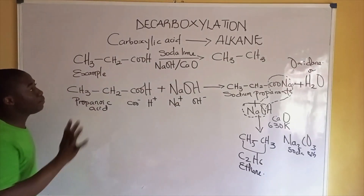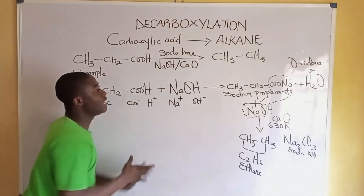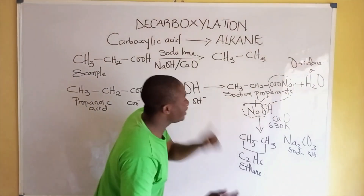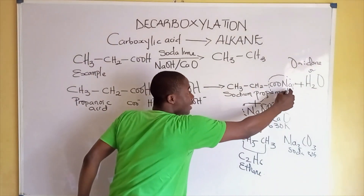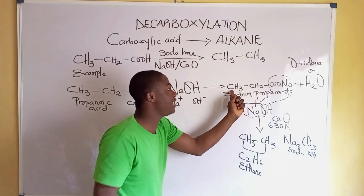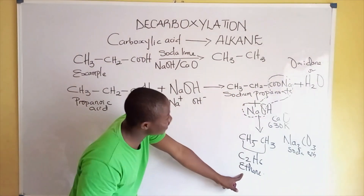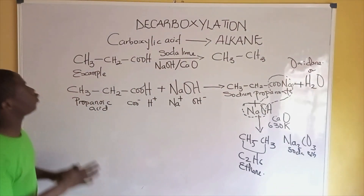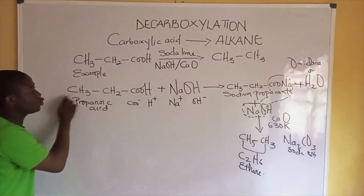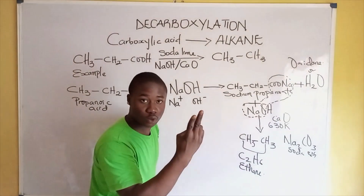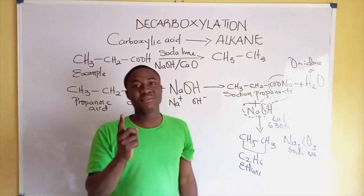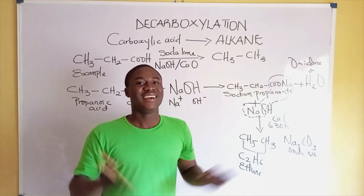To summarize: for decarboxylation, the carboxylic acid reacts with sodium hydroxide to form sodium propanoate, which further reacts with another mole of sodium hydroxide. We eliminate sodium oxide and a part of the compound to form soda ash, while the remaining hydrogen combines with the rest of the compound to give our product — ethane. So for decarboxylation, the carbon count is reduced by one: propanoic acid (3 carbons) gives ethane (2 carbons). Don't forget to subscribe to Chemistry Made Easy with Brett Edu for more videos. Thanks for watching.